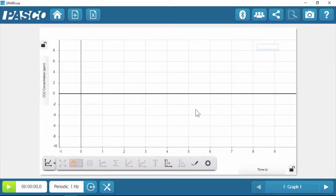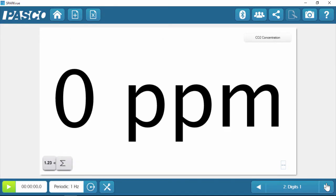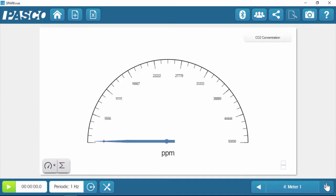To get started, I'll click CO2, which will build the basic data displays: a graph, digits, table, and a meter.